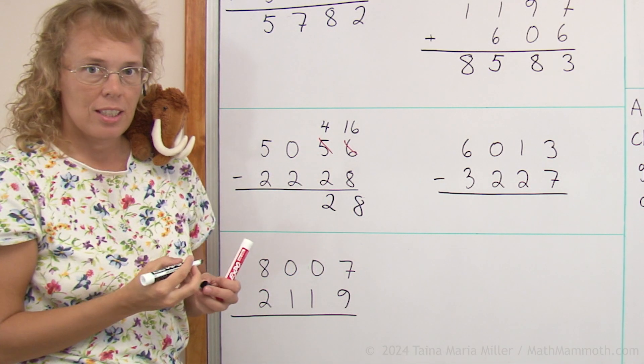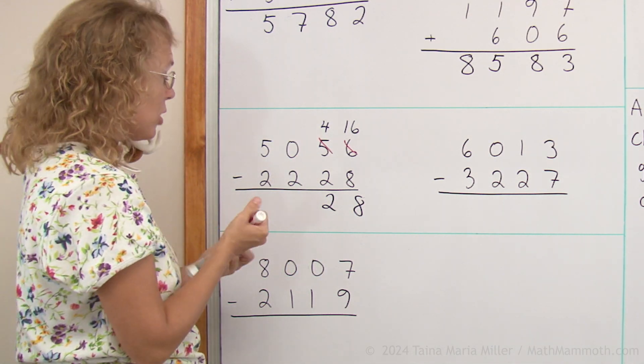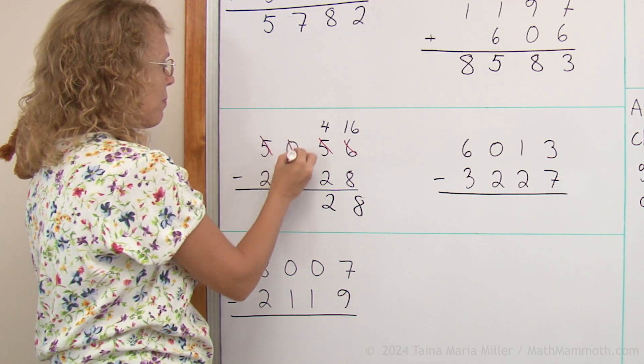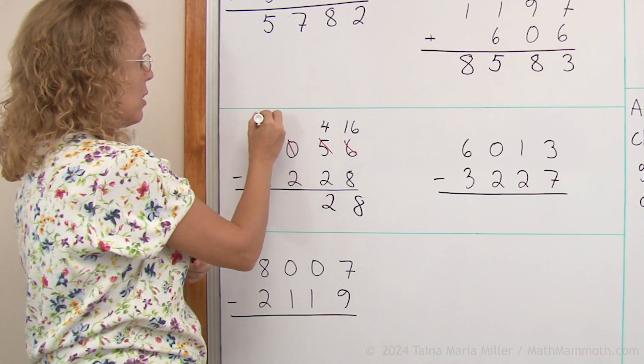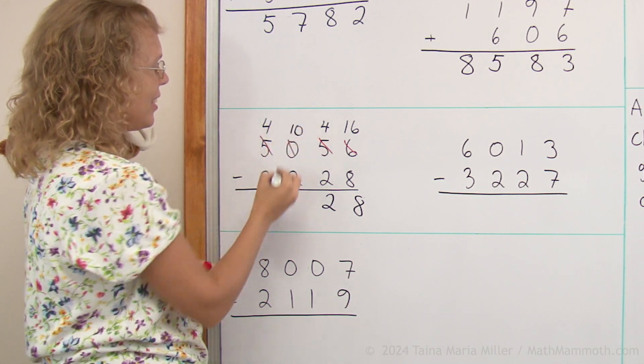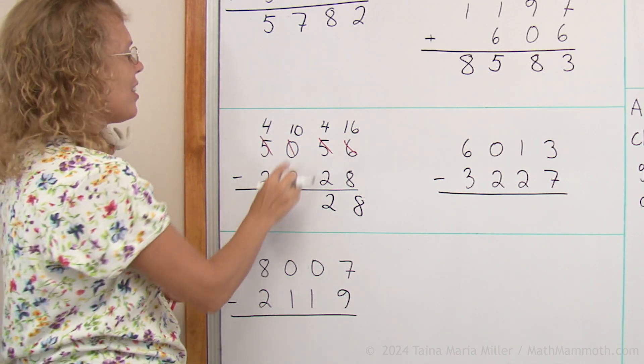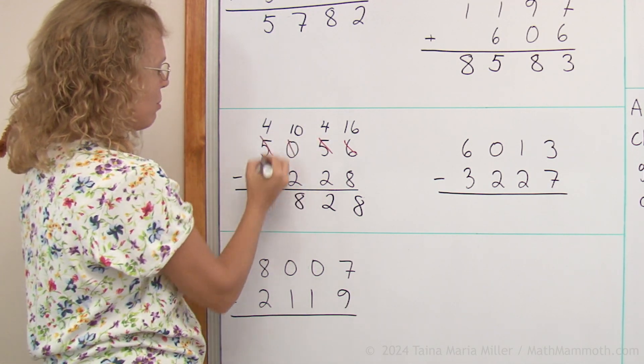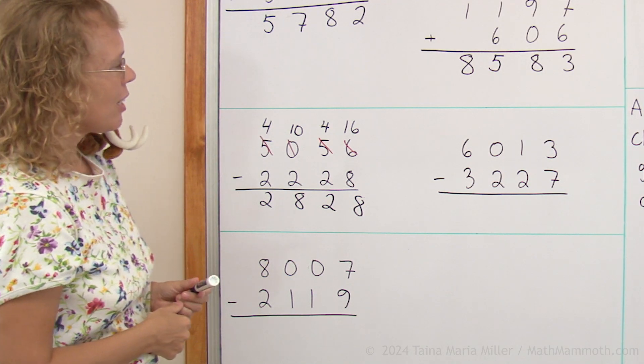And then here in the hundreds, I have zero minus two, so again I need to regroup. Take one of the thousands, leaving four thousand. And over here I get ten hundreds. And then ten minus two is eight, four minus two is two.